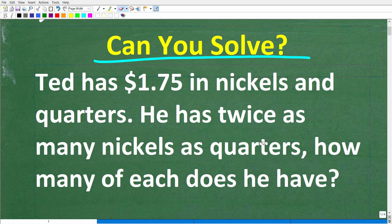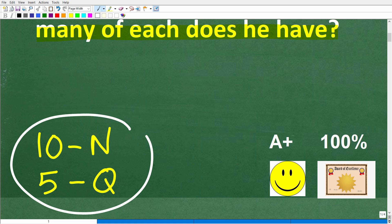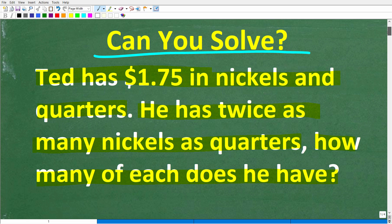Let me read it from the beginning. So Ted has $1.75 in nickels and quarters. He has twice as many nickels as quarters. How many of each does he have? All right, so let's take a look at the answer. The correct answer is he has 10 nickels and 5 quarters. Now, if you got this right, you definitely get a happy face, an A plus, a 100%, and a Certificate of Excellence